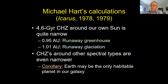Back to Michael Hart's calculations — this is what got me interested as a graduate student. With a rather simple model, he concluded that the 4.6 billion year continuously habitable zone around our Sun is quite narrow. Earth would experience a runaway greenhouse if it started inside 0.95 AU, and runaway glaciation if it started beyond 1.01 AU. Our inner edge turns out to be the same as Hart's, but our outer edge is much farther out, as I'll explain.